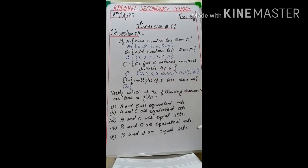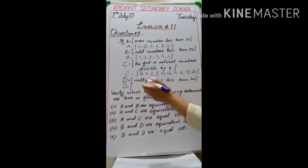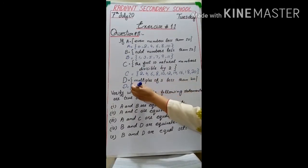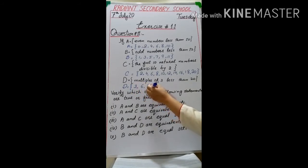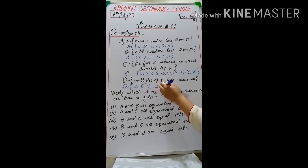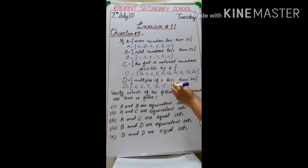Set D is the multiples of 3 less than 20 — multiples means the table of 3, but only below 20. The elements are: 3, 6, 9, 12, 15, and 18. After writing the elements of all these sets, you can easily judge whether the following statements are true or false.